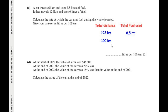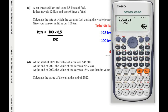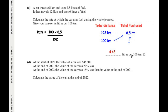To travel 192 kilometers the car used 8.5 liters, so we need to find how many liters are used per 100 kilometers. Using cross multiplication: rate = (100 × 8.5) ÷ 192, which gives us 425/96 or approximately 4.43 liters per 100 kilometers.